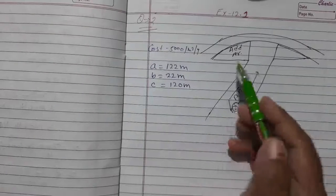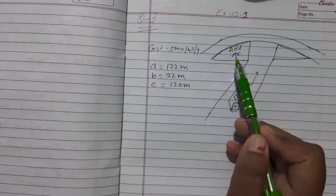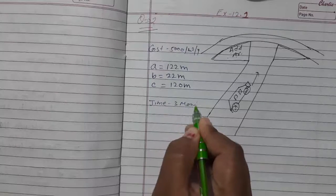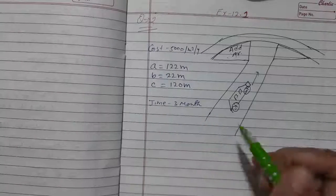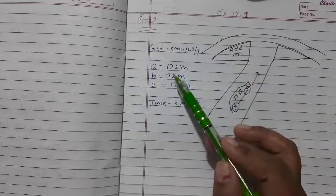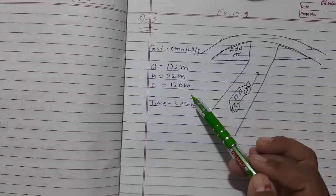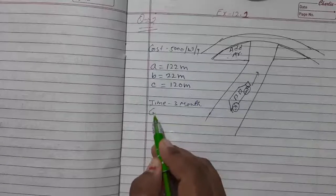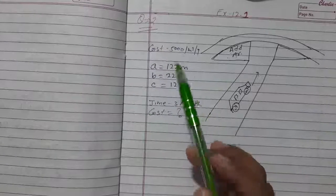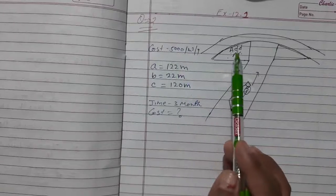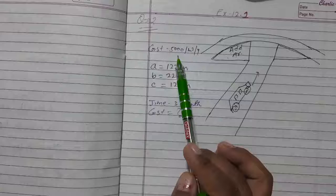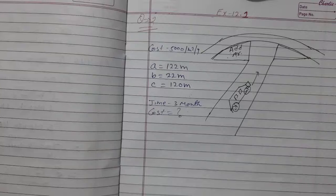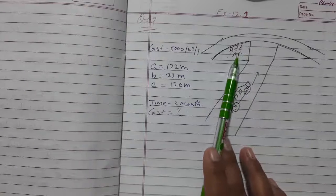And the company wants to hire this particular rectangular area for advertisement. The time duration is 3 months. The dimensions are 122 meter, 22 meter and 120 meter. We have to find out the cost. As the cost per meter square per year is Rs. 5000, first we will find out the area of this rectangular area.